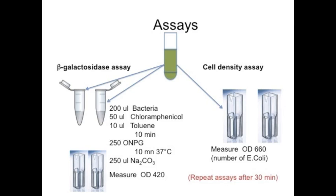Incubate it for 10 minutes, and then you will add the substrate ONPG, which is a substrate for beta-galactosidase. You incubate that again at 37 degrees, then stop the reaction with sodium carbonate and measure the OD at 420. You will also take another sample to measure the number of bacteria in your sample — for that, take a sample straight into a cuvette and measure an OD at 660.